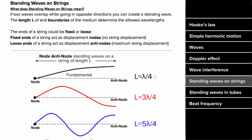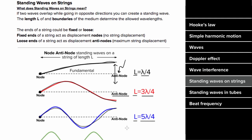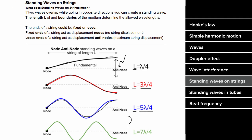What would a standing wave look like if one end were loose? That end would be an antinode, and the fundamental standing wave would only take the shape of one fourth of a wavelength, since it goes from a node to an antinode. So the string length equals one fourth of a wavelength. The next possible standing wave would be three-fourths of a wavelength, and the next five-fourths, and this progression keeps going.